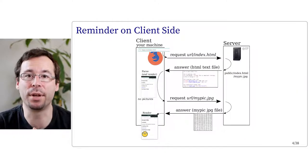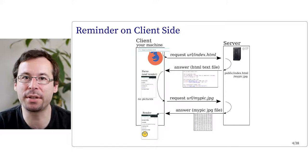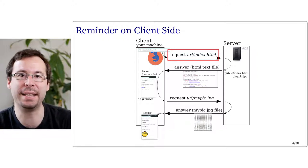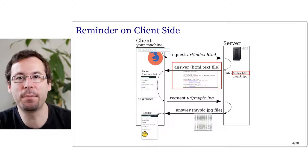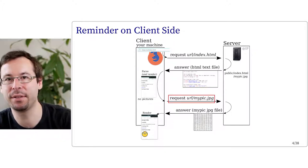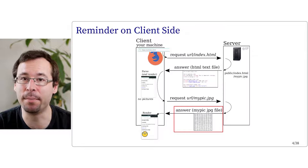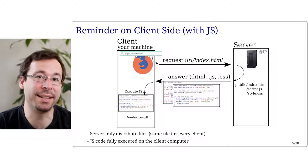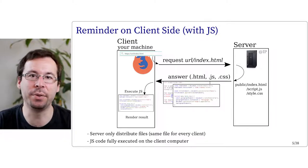Here is a recap of the communication steps between client and server with client-side programming. When your browser requests a URL designating a file — by default, index.html if you don't specify a filename — the server sends back the requested file. Your browser gets the file, parses it, and if it sees it needs a picture, for instance, it asks the server for that picture, which is then sent, and so on until all data are available. The same principle applies for CSS and JavaScript: the JavaScript file is sent by the server and the client receives the script code and executes it locally.